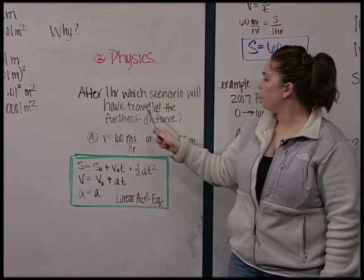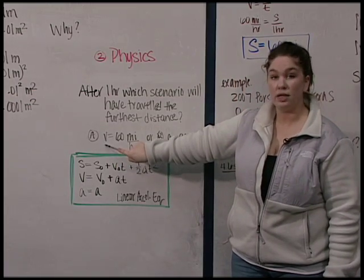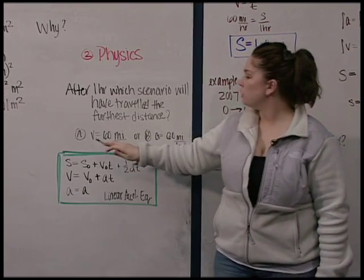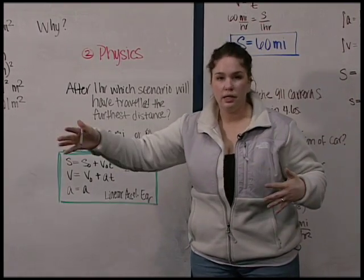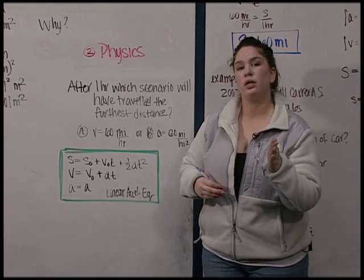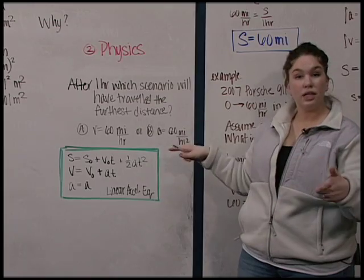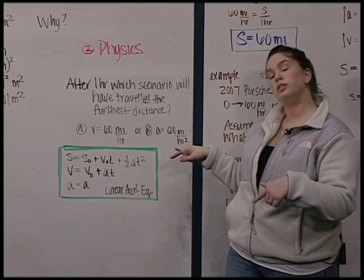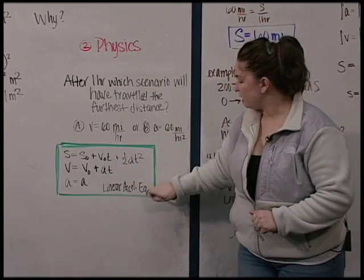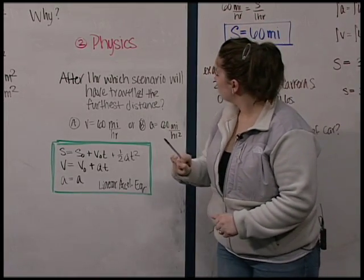After one hour, which scenario will have traveled the furthest distance? A, you're going at a constant velocity of 60 miles per hour. Or B, you're accelerating at 60 miles per hour squared. So in this one, you get up to speed, you're traveling at 60 miles per hour, and then you decide at one particular point you're going to start timing an hour. In that hour, how far have you traveled? Versus starting from rest, you begin accelerating at 60 miles per hour squared, how far will you travel in one hour? I've included the linear acceleration equations for future comparison. So we'll put those to the side for now.